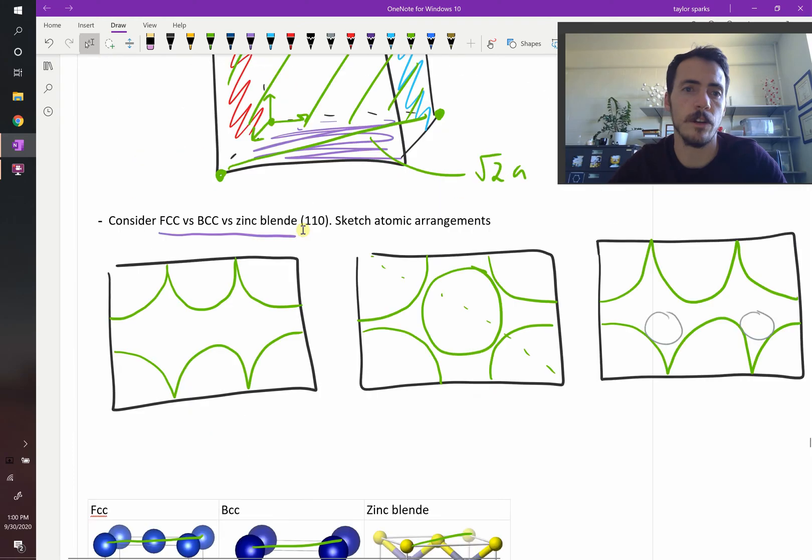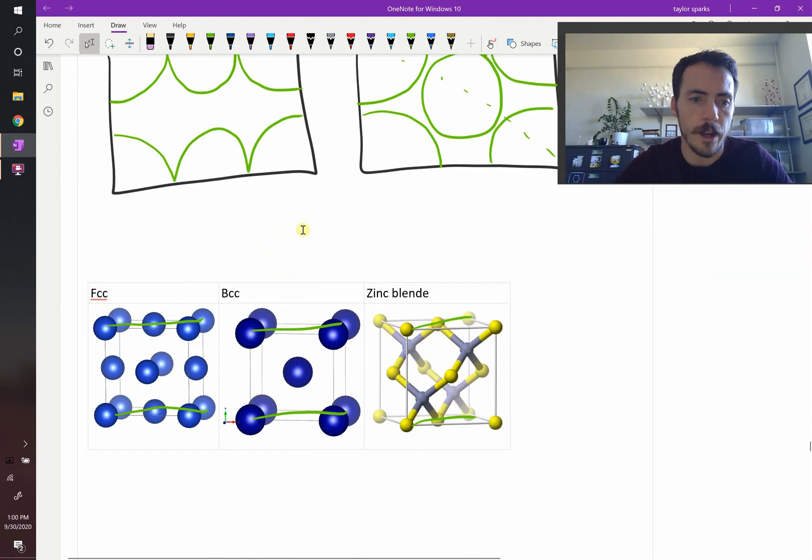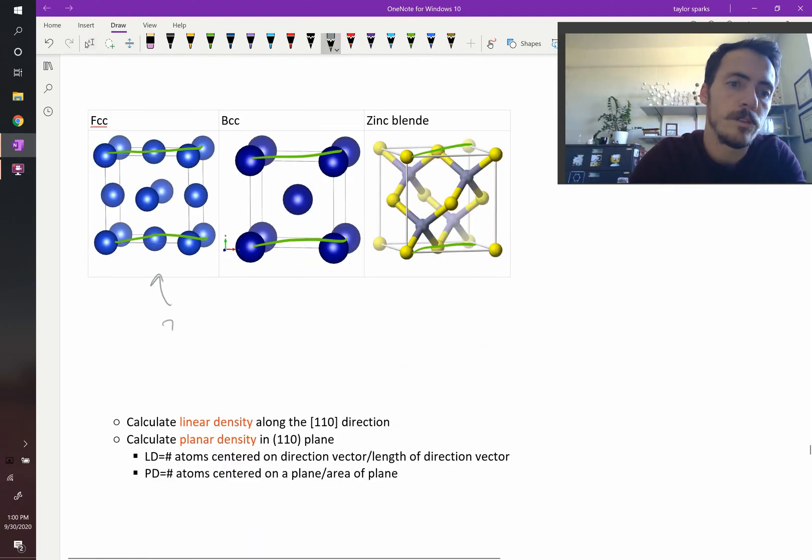So let's take a look at here at our examples for the FCC, BCC and zinc blende. So along the 110 direction, what's the linear density for FCC? Well, you hit half an atom, one full atom, a half an atom. So you're hitting two atoms per, this one would be two divided by root two over a, because you're hitting two atoms, half a hole and a half.